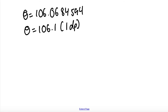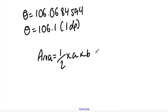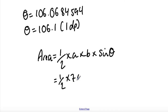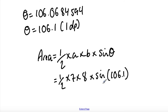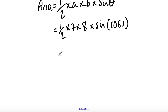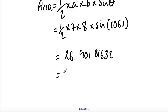To find the area of this non-right-angled triangle we use: area equals a half times a times b times sine theta. Substituting: area equals 0.5 times 7 times 8 times sine 106.1. Therefore the area is equal to 26.9 (1 d.p.).